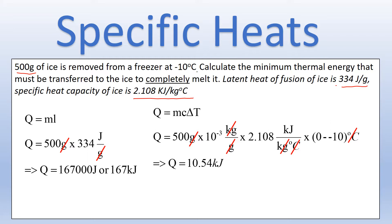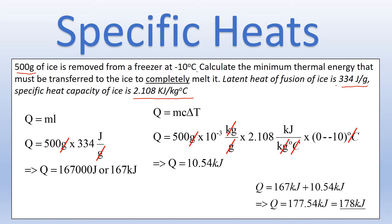Multiplying by the temperature change in degrees Celsius leaves us with kilojoules. When doing a temperature change it's always final minus initial, so the final temperature is 0 and it started at minus 10, giving us 0 minus minus 10. That gives an overall thermal energy to change the temperature of 10.54 kilojoules. Adding those two values together tells us the minimum energy required to completely melt the ice: 178 kilojoules.